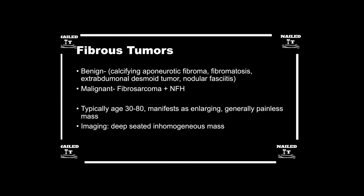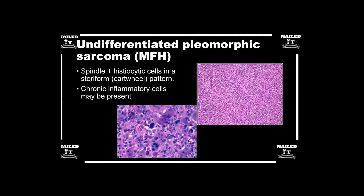There's a whole category of benign fibrous tumors not worth getting into in detail. The malignant fibrous tumors — the fibrosarcomas — appear in a relatively similar age range to most soft tissue sarcomas: adults, roughly 30 to 80. They present really similarly: enlarging, generally painless masses that are deep and big, which we commonly see with fibrosarcomas.